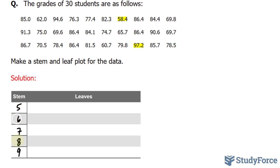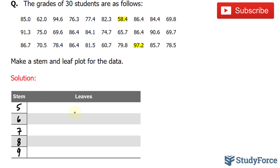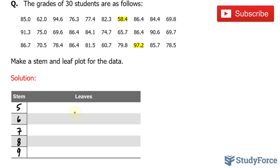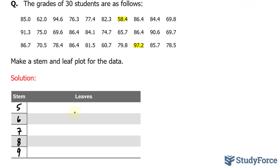Once we've created our stem, we can now analyze all the numbers that are in the 50s and write the rest of the number in the leaves column. For instance, we have a grade that is 58.4, so we'll write down 8.4. And this happens to be the only grade in the 50s.